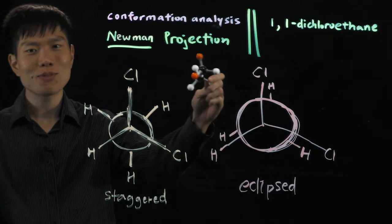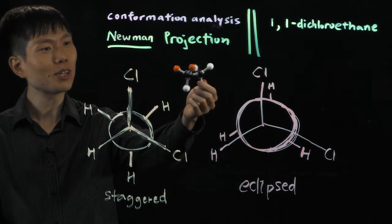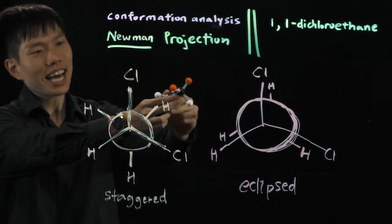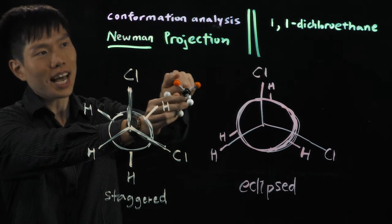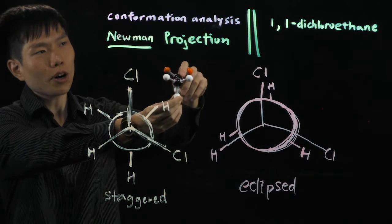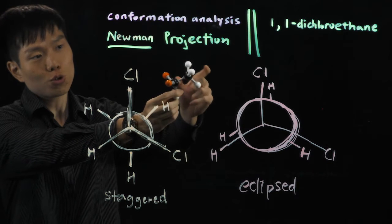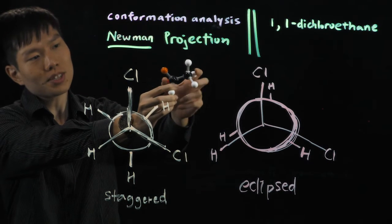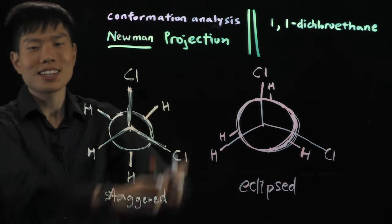Now here in my hand, we have a 1,1-dichloroethane molecule. Again, you can observe the two orange balls represent the chlorine atoms, the white balls represent the hydrogen atoms. And as usual, the two black ones that are a bit bigger in size, these are the carbon atoms.